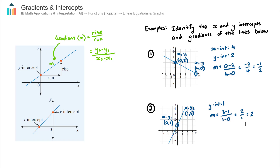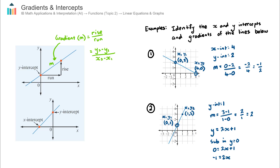I'm going to use a little algebra and the slope-intercept form of a straight line to find the x-intercept. I know the equation of this line is y = 2x + 1. Now I substitute in y = 0, because at the x-intercept the y value is 0. So 0 = 2x + 1. Subtracting 1 from both sides gives negative 1 = 2x. Dividing both sides by 2 gives x = negative one half. So the x-intercept is negative one half.